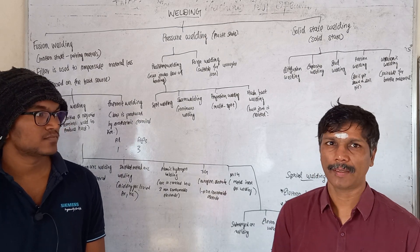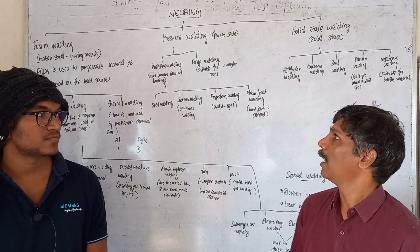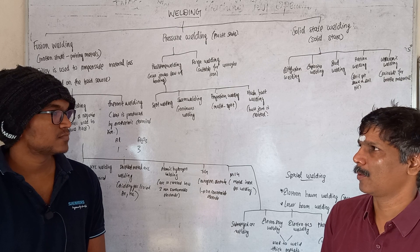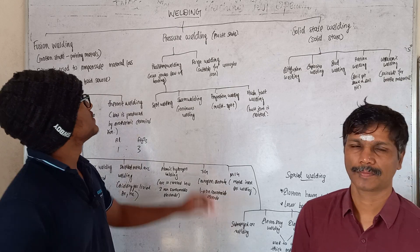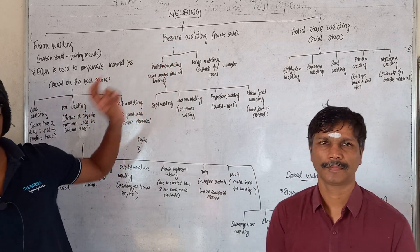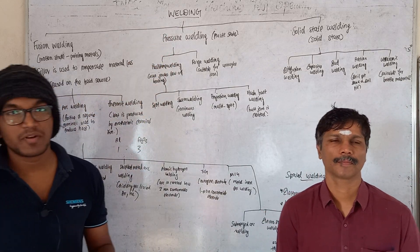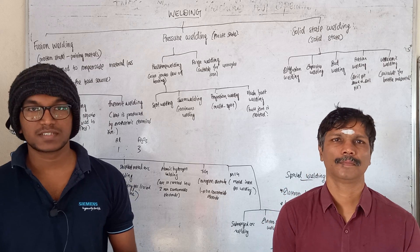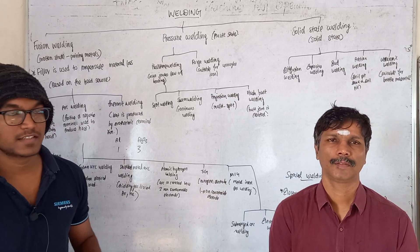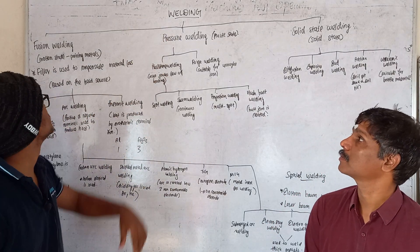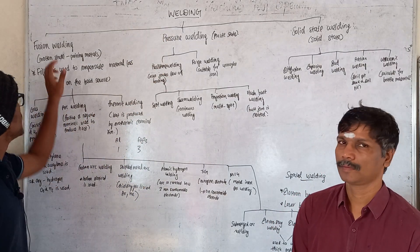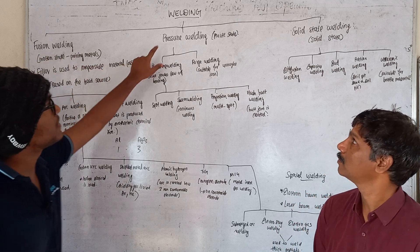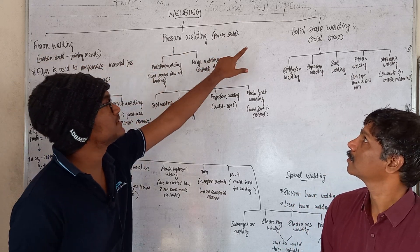The topic is types of welding. We will talk about every class. First, what is welding? We can join two metals with welding. With the help of heat and pressure, we can join metals through the welding process. We are going to classify welding into three types: fusion welding, pressure welding, and solid state welding.